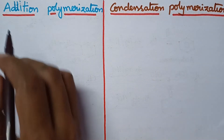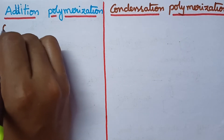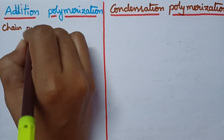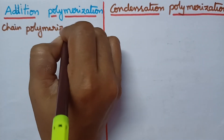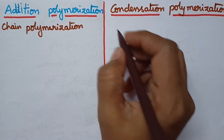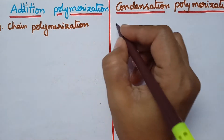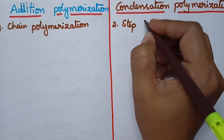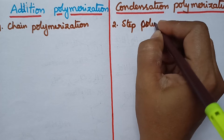Addition polymerization is also called as chain polymerization. Condensation polymerization is also known as step polymerization.